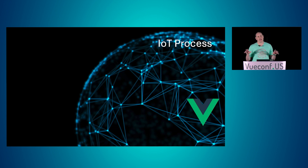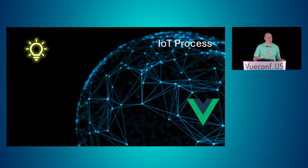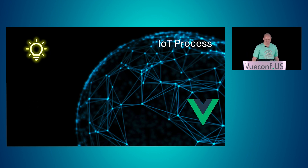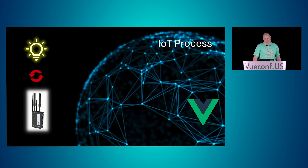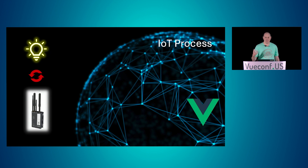Let's talk about the IoT process real quick. This is a high-level landscape. Usually out in the real world, you'll have some sort of device like a light. You've got to figure out how to get that light information all the way to the consumer's front-end browser. Usually the first step is an internet gateway, or something that can connect to that IoT device and expose it to the internet.